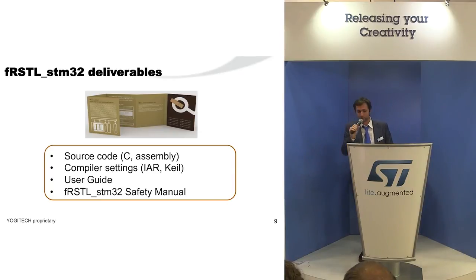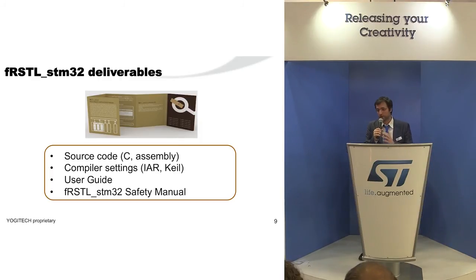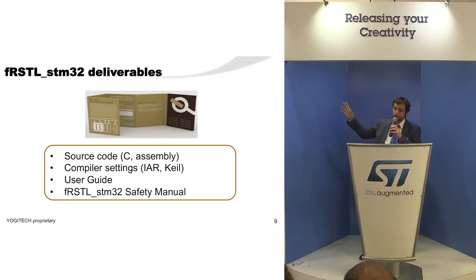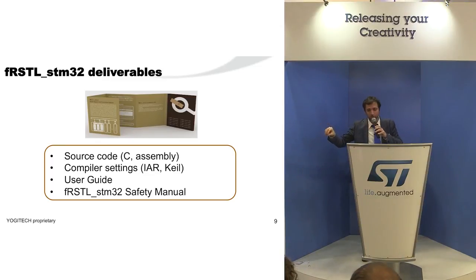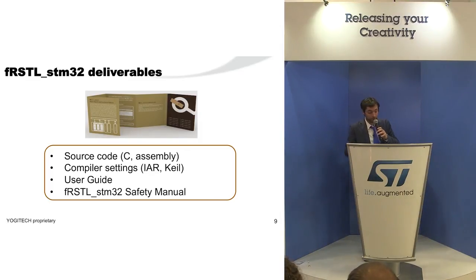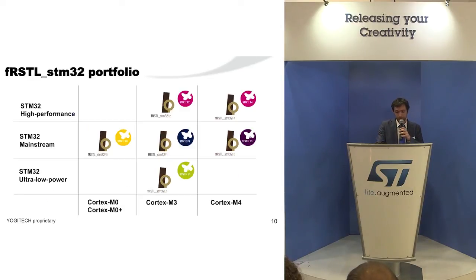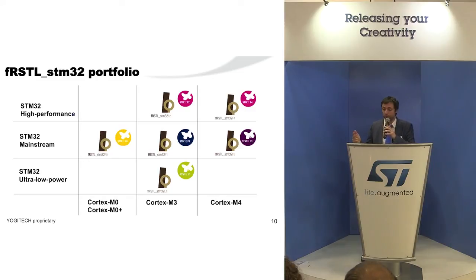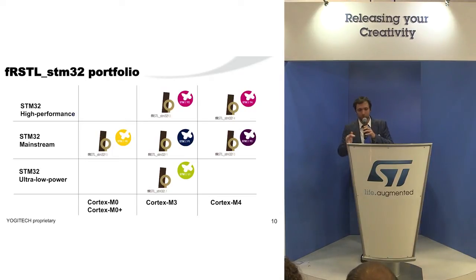In terms of what we deliver: we provide the source code in C and assembly along with compiled scripts. We support the most common toolchains including Keil and IAR. There is also full documentation — a user guide and a safety manual for the library itself — so you have the safety manual of the microcontroller owned by ST, and separately the safety manual of our library, which we send to interested customers for evaluation. Currently we support the STM32 F0, F1, F2, F3, F4, and L1 families, and we support all part numbers within those families.